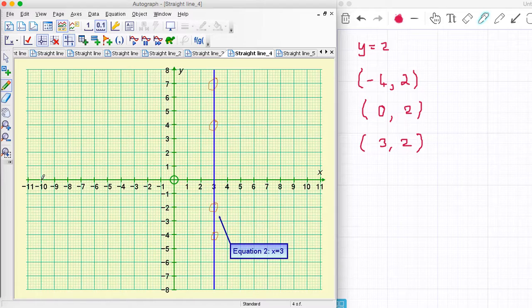Again, a lot of people get confused because the x axis goes horizontally, but this line - I should have said vertically. The x equals lines always go vertically.